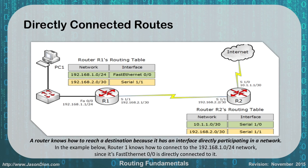For directly connected routes, in this diagram each router has two directly connected routes. The left router has Fast Ethernet 0/0 on the 192.168.1.0 network, and also a directly connected route for the 192.168.2.0/30 network on the serial interface between the routers. The right router is also on that 192.168.2.0 network, and has its own 10.1.1.0 network connecting up to the internet. The router understands how to reach these destinations because it is directly connected to them.